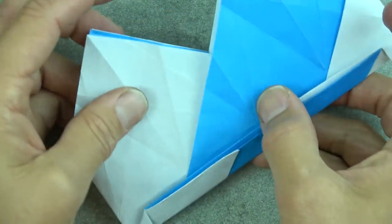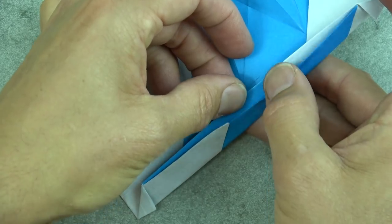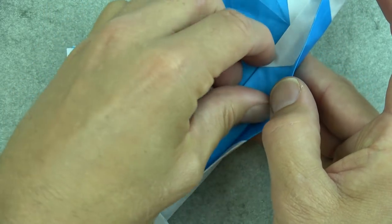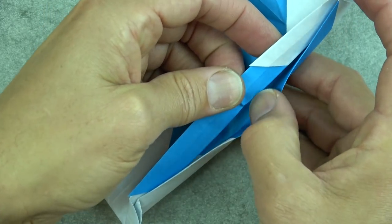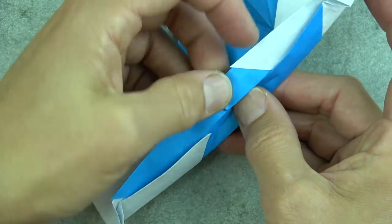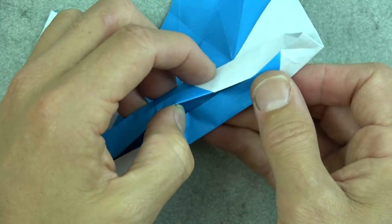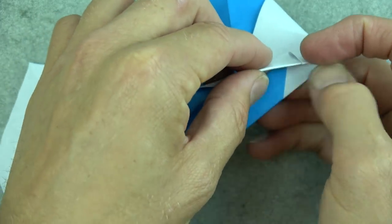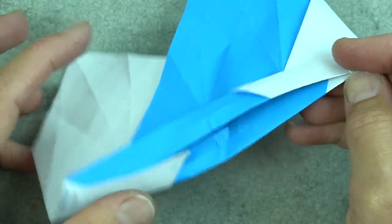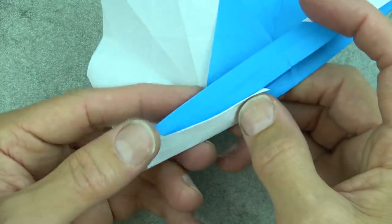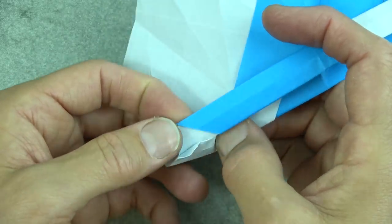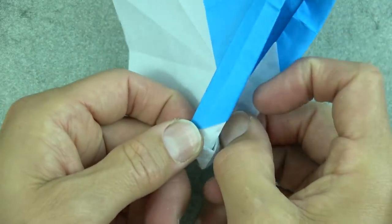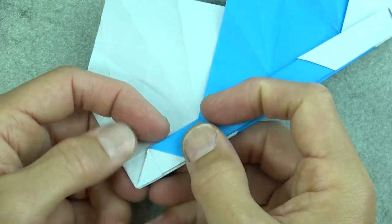Okay, now take this top flap and we're going to stick it underneath this edge, just right into that pocket. So just kind of push it inside. So it's like that on that side, and do the same on this side. So it's like that.